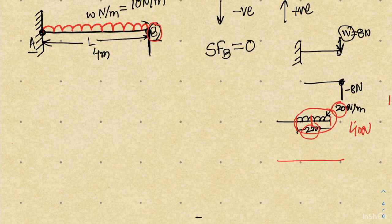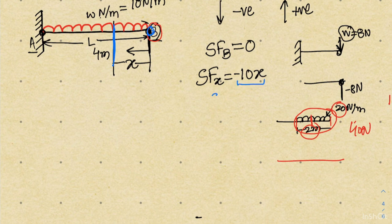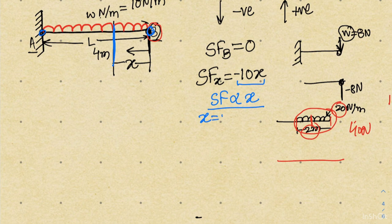Since point B is where the UDL starts and it is just a point, the shear force at point B will be 0 newton. As we move towards point A, the shear force increases with distance. For any distance x from point B, the shear force is minus w times x, i.e., minus 10 times x. Since the load acts downward, a negative sign is used. When x equals 4 meters at point A, the shear force becomes minus 10 times 4, which is minus 40 newton.